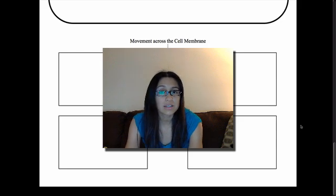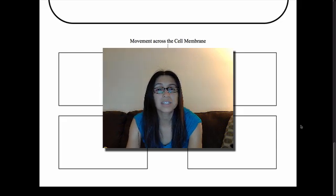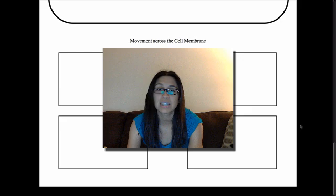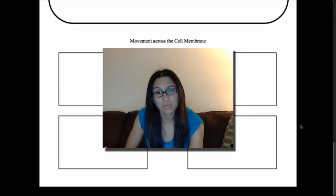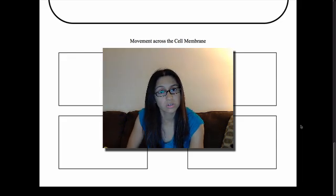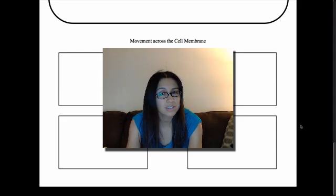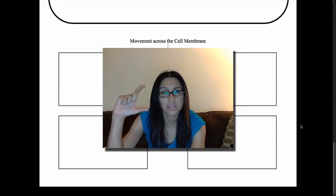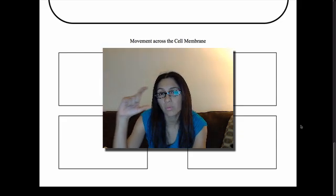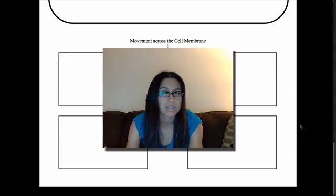The waste that your cells release is collected in your urine and released from your body. Every single one of your cells dumps waste into the blood, and when the blood reaches your kidneys, the kidneys filter out the waste — along with any excess water — into your urine. So when you pee in a cup at the doctor's office, that waste has been collected from each and every one of your cells.